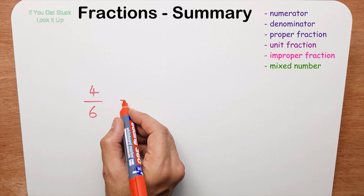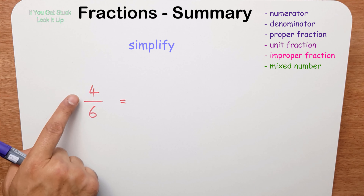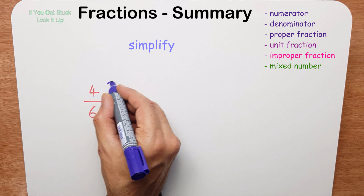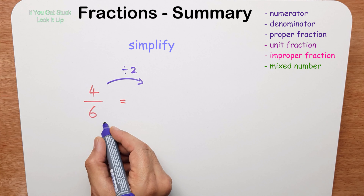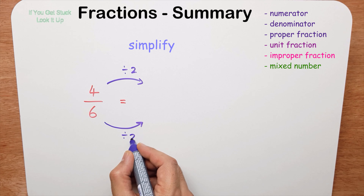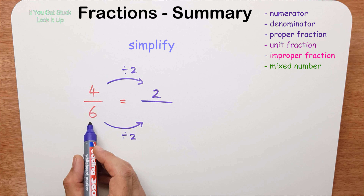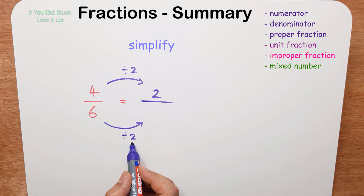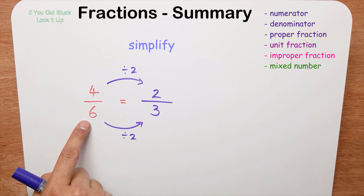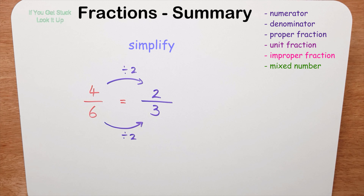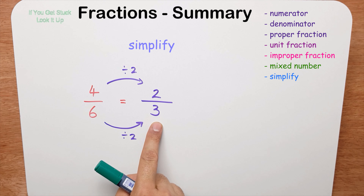I want to make it simpler. I can see that both numbers are even and both are in the two times table, so I can divide the numerator by two. Whatever I do to the numerator I have to do to the denominator. Four divided by two is two, and six divided by two is three. So I've simplified four-sixths to two-thirds.